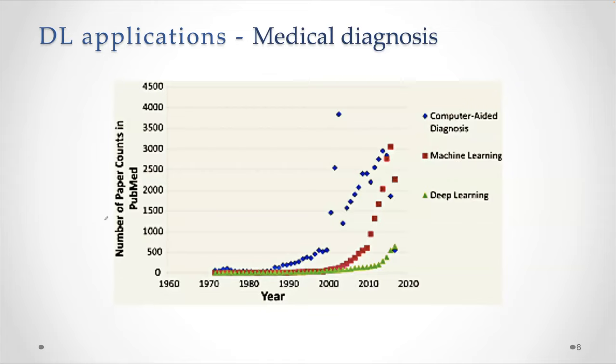If you look at medical diagnosis, this chart shows number of paper counts in PubMed in machine learning, as well as deep learning, almost exponential growth.